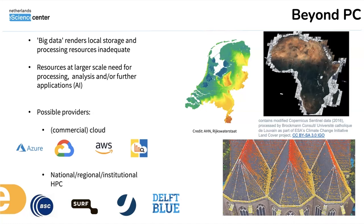Yesterday we talked about cloud — basically the big commercial providers like Google and Amazon. This logo that no one knows is the SURF Research Cloud. Some national centers also offer cloud services or act as a portal to commercial cloud services. But the other side of this coin are the national and regional institutional HPC offerings — things like the Barcelona Supercompute Center, SURF in the Netherlands, and Delft Blue, which is the Technical University in Delft's own supercomputer that researchers there can use.